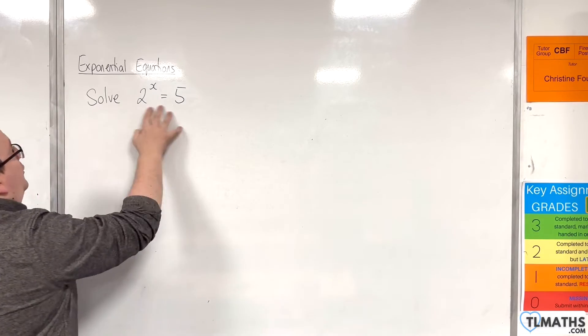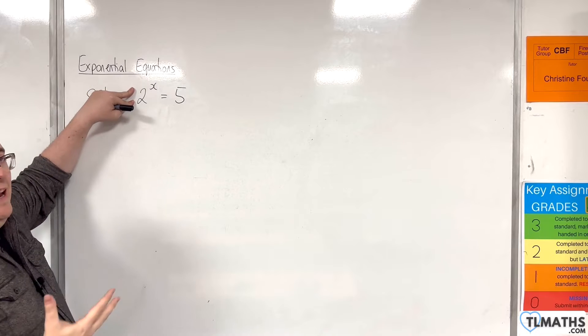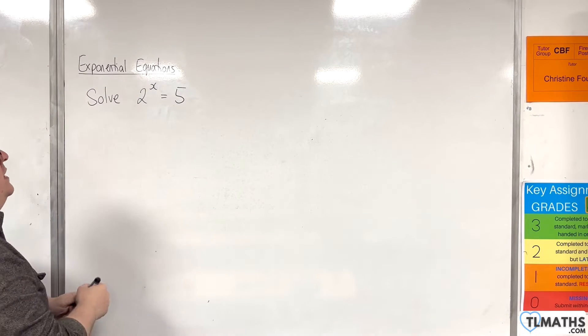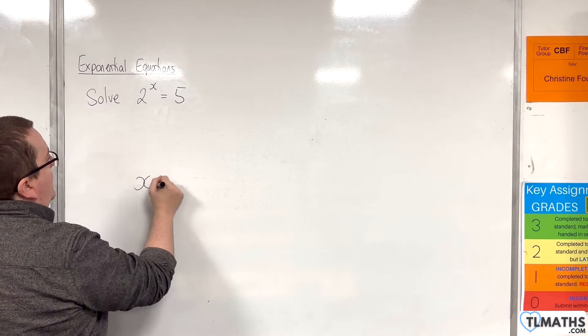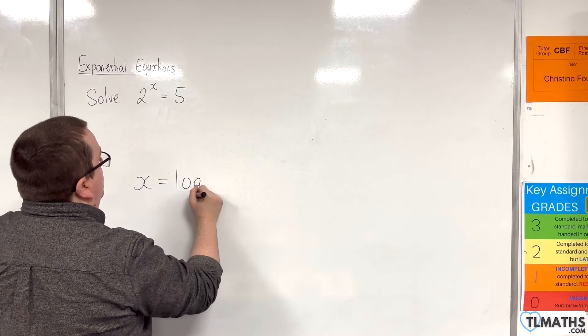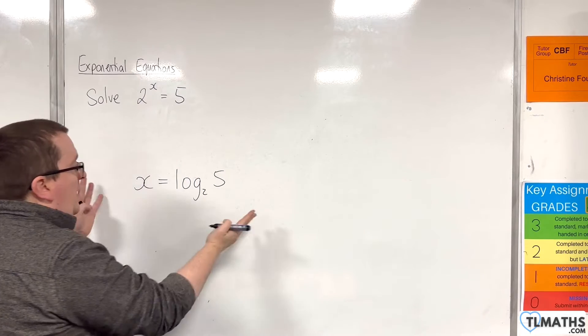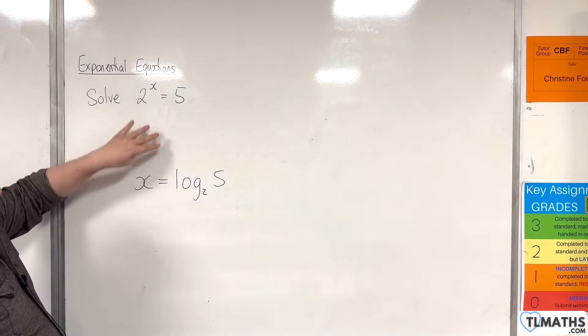So, when solving 2 to the x is equal to 5, this is in exponential form. So, I can go to logarithmic form and write x is log base 2 of 5. And that's it. That is the solution to this equation.